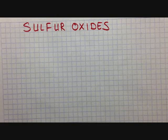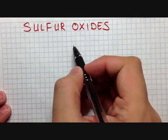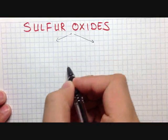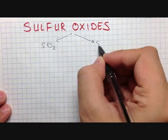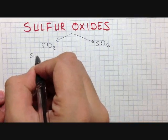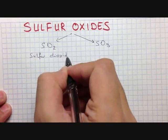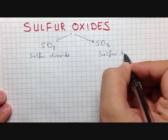Let's continue our sulfur subject — we will cover sulfur oxides. We know two sulfur oxides: sulfur dioxide (SO₂) and sulfur trioxide (SO₃).